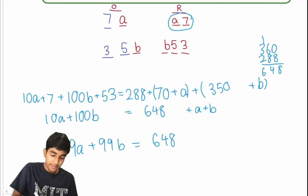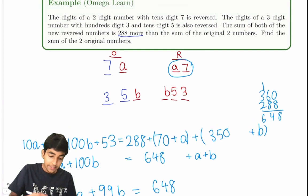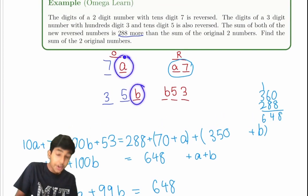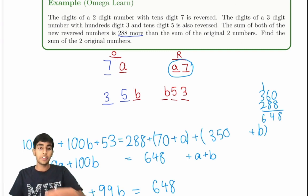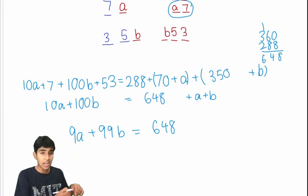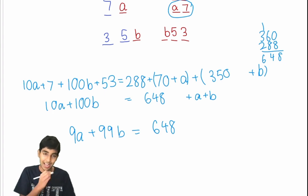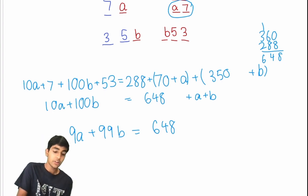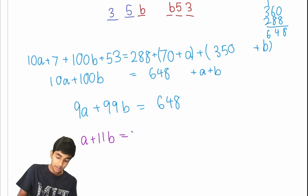And now, this right here is a Diophantine equation. Why? It's an equation, but the key thing is that A and B are digits, so they have to be integers. That's the key. The thing is, we only have one equation with two variables. And if we had normal equations, that would be a big problem. But we have one special condition: A and B are integers. That's where the name Diophantine comes from. So to solve this, let's divide the full equation by 9. You get A plus 11B equals 72.